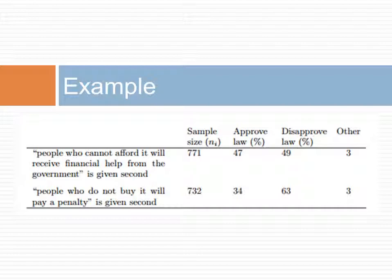Let us look at an example. In this example, we want to know if the order of asking the question mattered. The respondents were randomly asked about features of the new health insurance law. For each randomly sampled respondent, the order of asking was randomized also. The table shows the results of this experiment. The question was whether, with 95% confidence, we can conclude that the order of asking the question did not matter.